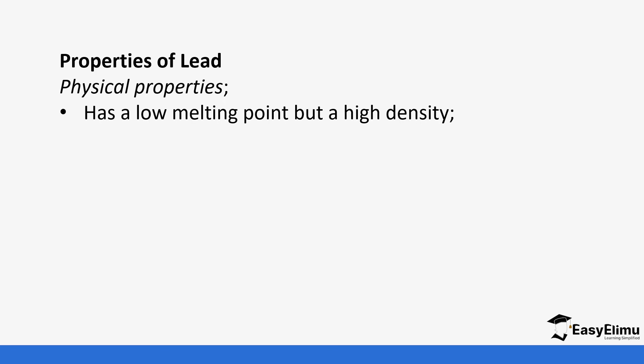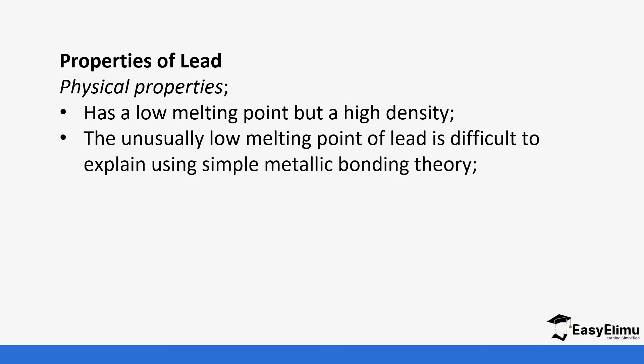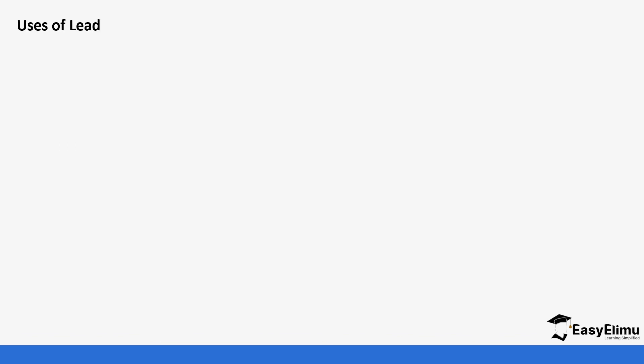Some physical properties of lead: it has a low melting point and high density. The low melting point of lead is not easily explained using normal metallic bonding theory — this is something you will learn further as you progress in chemistry. Lead is soft, pliable, and relatively malleable. Lead is also very low in the reactivity series, so it is not very reactive, and further chemical properties will be studied beyond high school.